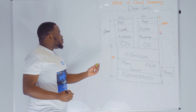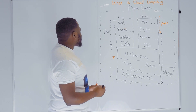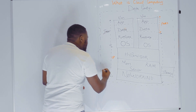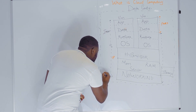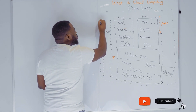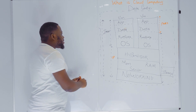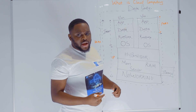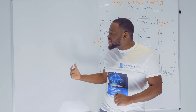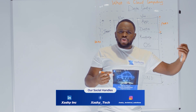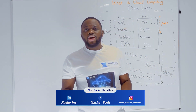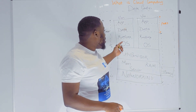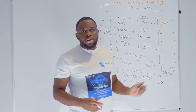Now, one other thing you're going to hear about is software as a service. This is the easiest one because with software as a service, the cloud provider manages everything — from the networking all the way to the application. As a customer, you do not manage anything. You simply make use of the software as a service. You subscribe to it, you use it, you pay for it, and you do not manage anything — be it the VM, be it the runtime, be it the data, nor the application.